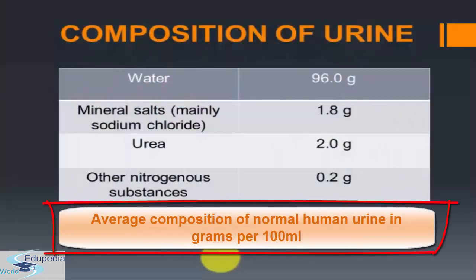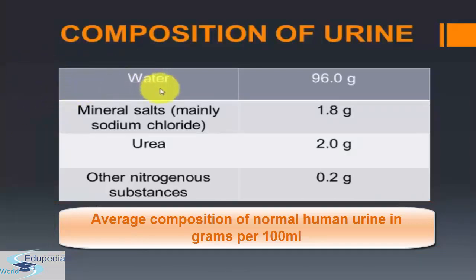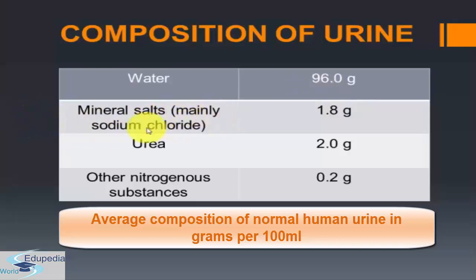The average composition of normal human urine in grams per 100 ml is as follows: water is present in the amount of 96 grams, then the amount of mineral salts — mainly sodium chloride — is 1.8 grams, then the amount of urea is 2 grams, and other nitrogenous substances are also present. These were all the constituents of urine.